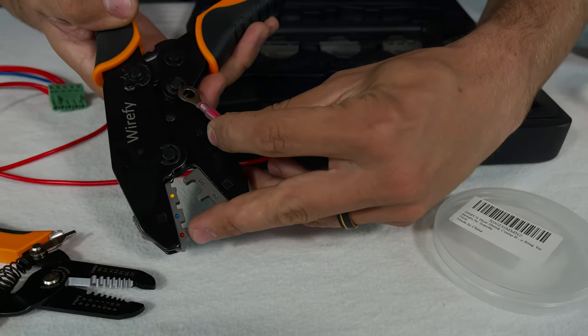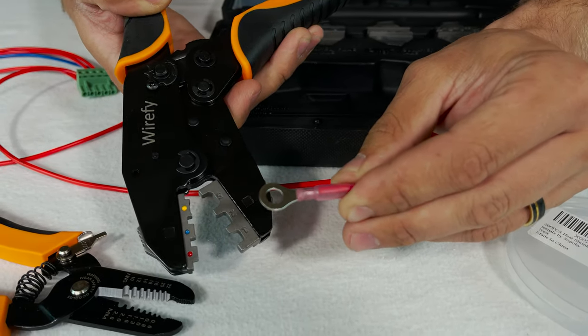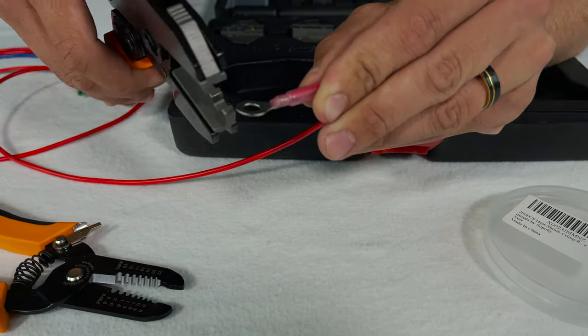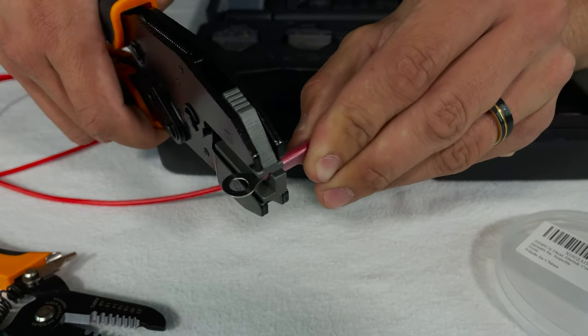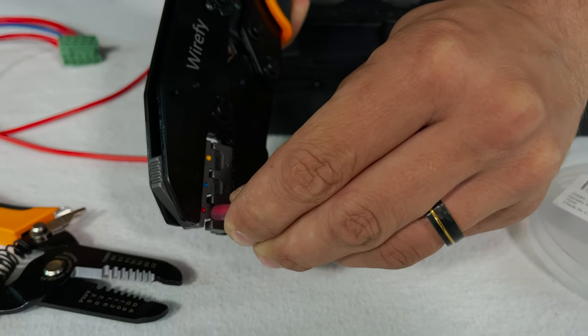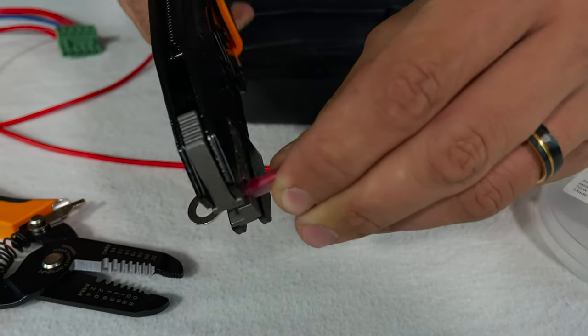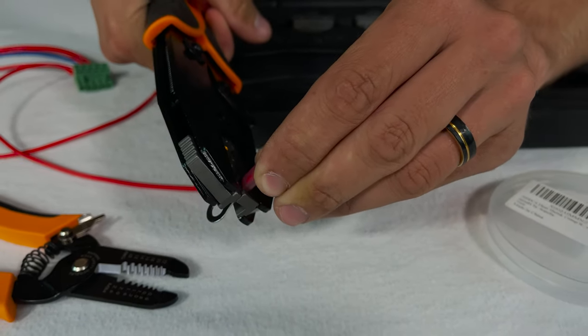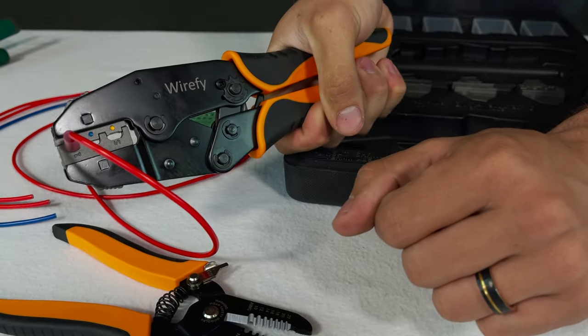And I'm gonna put it on the red setting here because this is a red connector and the color codes are based on the wire size. And I'm gonna get it on there like that as you can see and then squeeze this all the way down and I'm gonna go until the handles touch together.